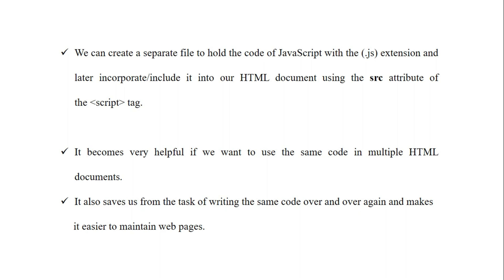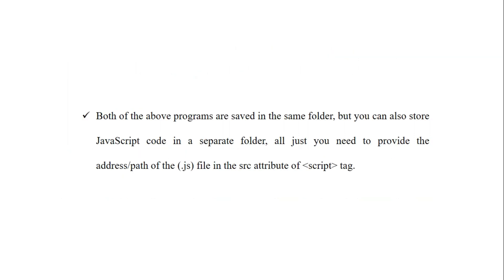To include JavaScript code into HTML using external JavaScript, we have to create two files. The first is our main file, that is the .html file, and the second is the file where we write the JavaScript code, saved with the .js extension. When we need to write the same code repeatedly, that is when we use external JavaScript.